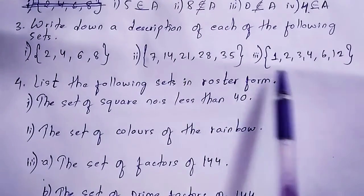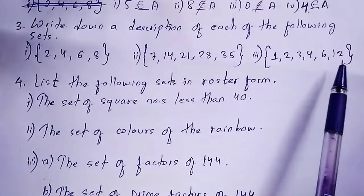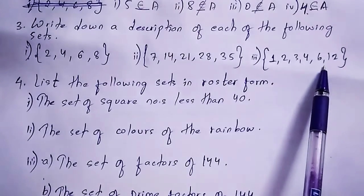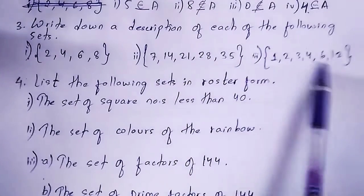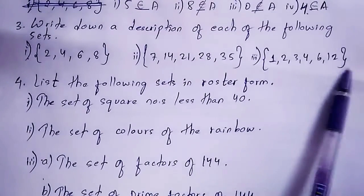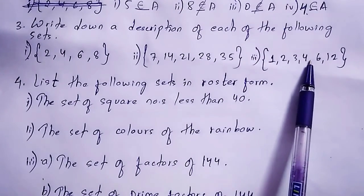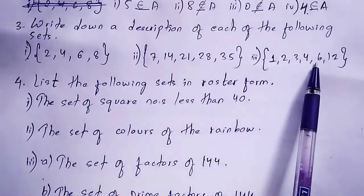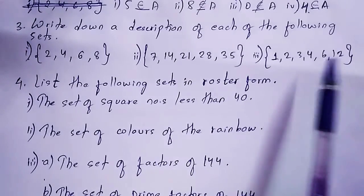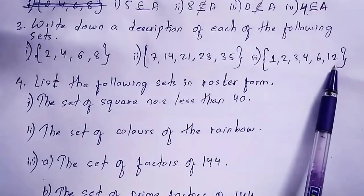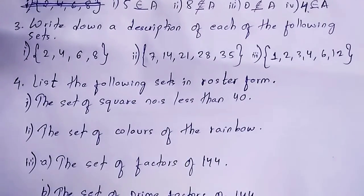Number 3 contains 1, 2, 3, 4, 6, and 12. All these numbers are divisible by 12: 1, 2, 3, 4, 6, and 12 itself all divide 12. So the description is: factors of 12.